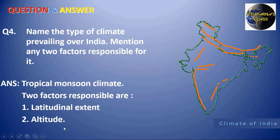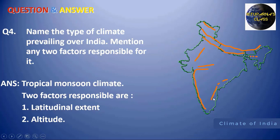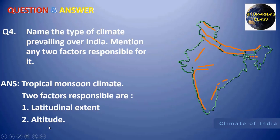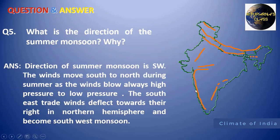The second factor is altitude. Many big mountains exist within India. Because of the presence of mountains, the temperature in adjoining places will be relatively low — regardless of whether they are near or far from the equator. At high altitude, the normal lapse rate plays a major role in the distribution of temperature.